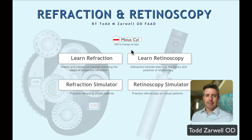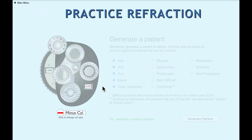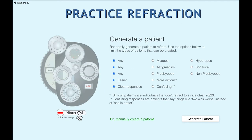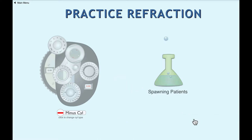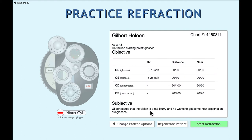So let's do a refraction. I'm going to do a minus cylinder refraction and go to the simulator. I'll generate a patient and this could be really any patient. Let's see, Gilbert Helene is 43, states that vision is a tad blurry and he wants to get some prescription sunglasses. He's a 375 in his current glasses in the right eye, a 525 in the left eye. Distance vision is 2030 with his glasses. Near vision is 2020.